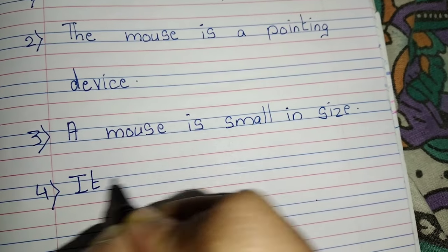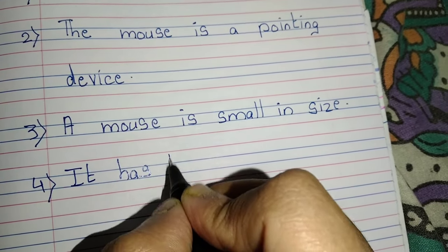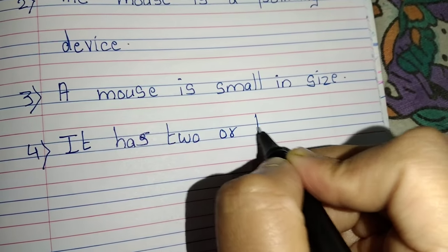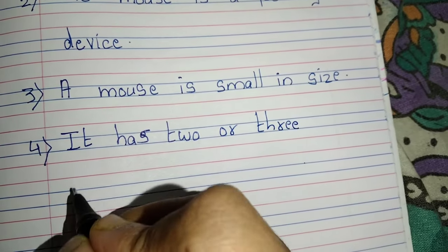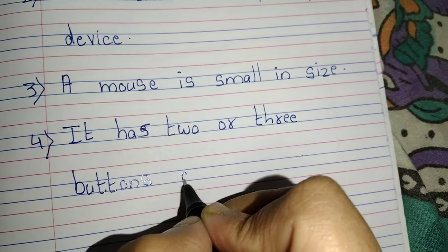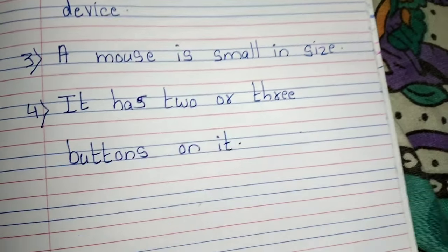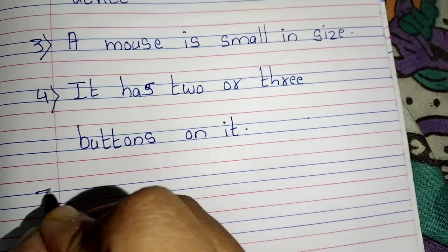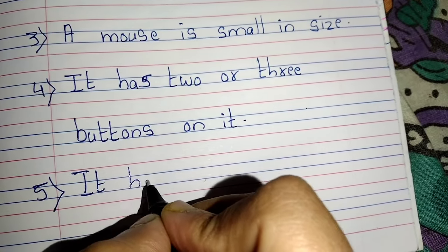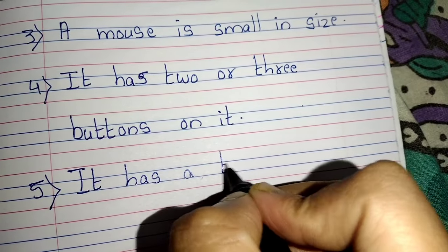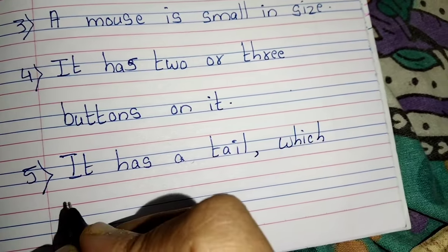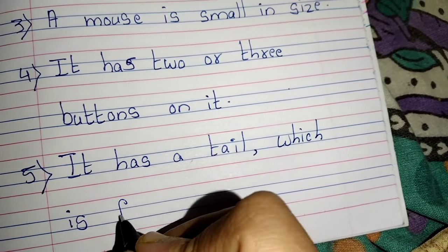A mouse is small in size. It has two or three buttons on it. It has a tail which is fixed to the CPU.